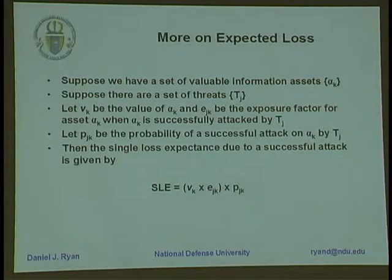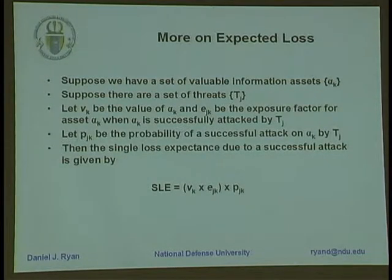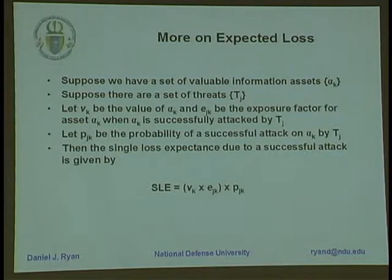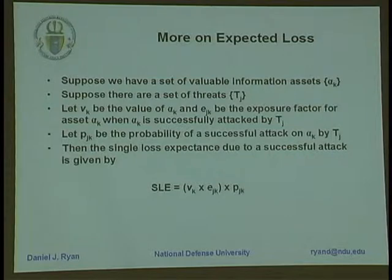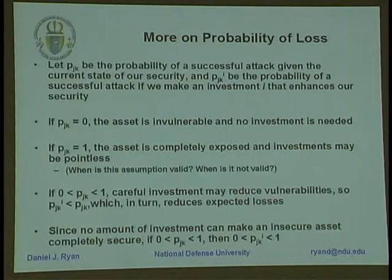If we start thinking about this in terms of mathematical models, our information infrastructures consist of some set of information assets and some set of threats trying to exploit vulnerabilities to reach those assets. We have values, exposure factors, and probabilities associated with the abilities of those threats to produce impact. That's supposed to translate into something called a single loss exposure, which is the value of the asset times the exposure factor times the probability that a successful attack will occur.